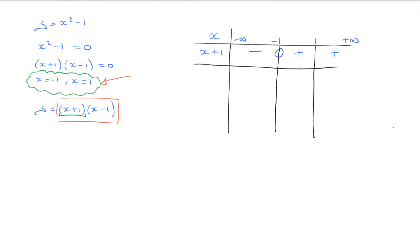We draw a line and create a second row for the second factor, x minus 1. We write x minus 1 and study its sign. x minus 1 equals zero when x equals 1, so we write 0 at x equals 1. For x values less than 1, x minus 1 is negative, so we place a negative symbol in each of the two columns to the left of 1. For x values greater than 1, x minus 1 is positive, so we add a plus symbol there.